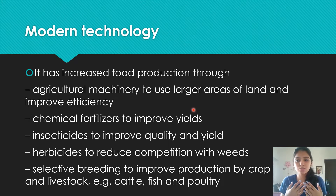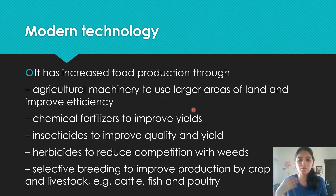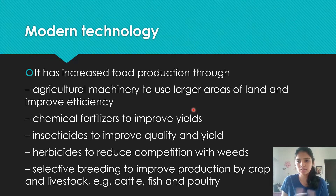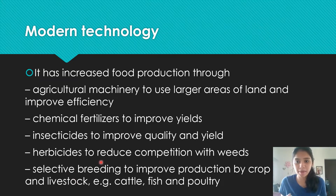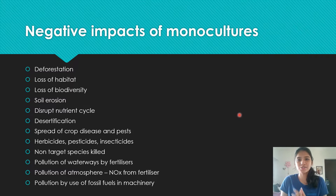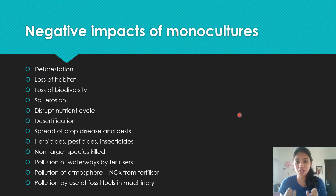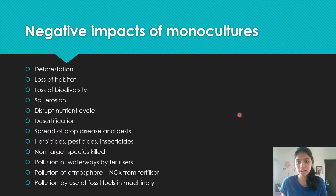Then we have selective breeding, as covered in Chapter 17 or 18, which helps improve production by crop and livestock. You choose crops or animals with desirable characteristics, breed them together, and obtain desired products. Just remember these points — you don't have to memorize my explanation, just understand it, which will help you mark up these points. Now, monocultures — this PowerPoint has a lot of lists to memorize, so screenshot the slides and study them.